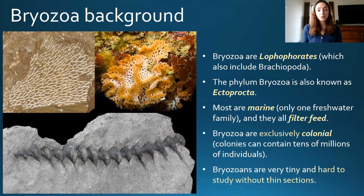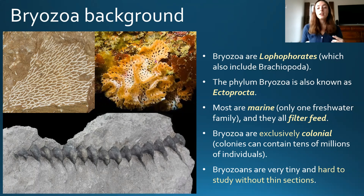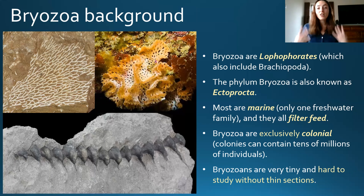Most bryozoans are marine, with only one freshwater family in the whole phylum. They are all filter feeders and they are all colonial. If you watched the sponge and cnidarian videos, you probably understand a little about coloniality versus a solitary lifestyle. Bryozoans have a colonial lifestyle, meaning they have a bunch of individuals living in one animal, rather than one individual living as that animal.